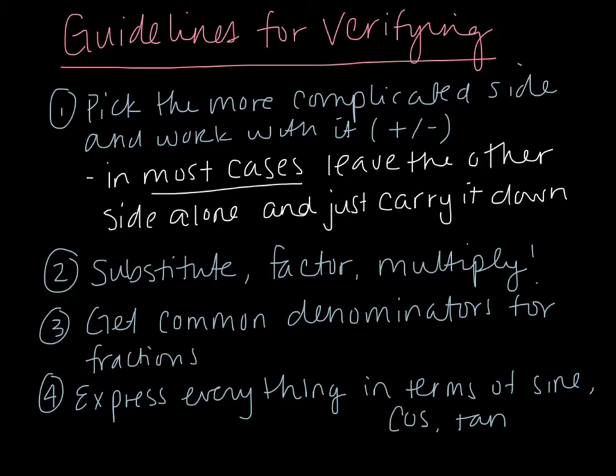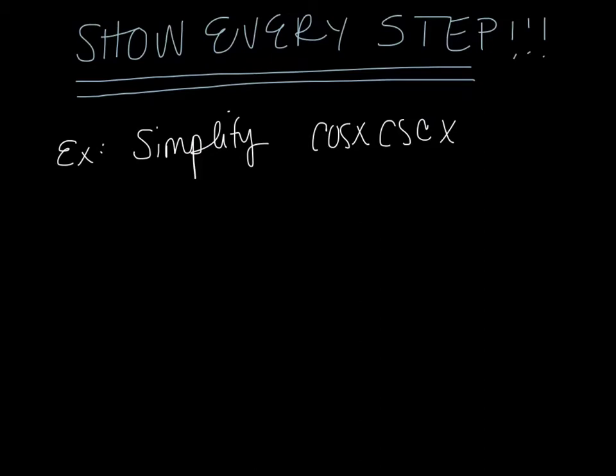Once you pick your side, think about what you can substitute using all of our identities. Can you factor? Can you multiply? Anytime you are working with fractions, you want to think about getting common denominators. In most cases, you want to express everything in terms of cosine, sine, or tangent — getting everything back to those basic three trig functions is the main goal. Finally, show every step of your algebraic process; you should have a long list of your equation after you are done simplifying.